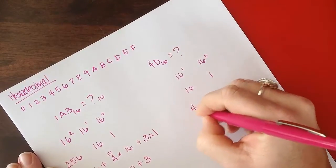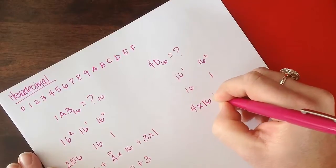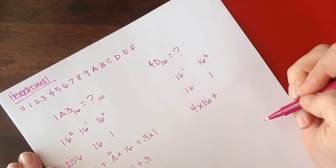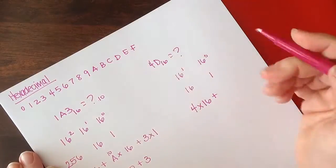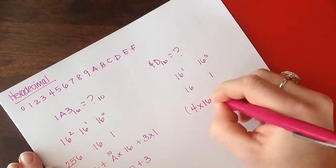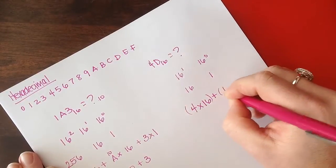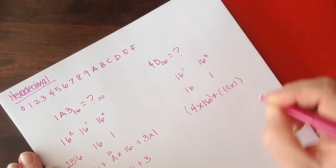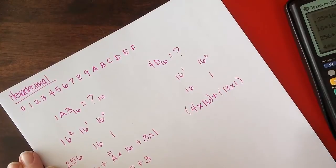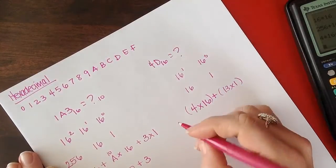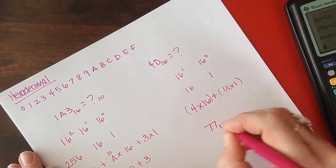We've got 4 times 16 plus D. D is 10, 11, 12, 13, so plus 13 times 1. So 4 times 16 plus 13 times 1 is going to be 77 base 10.